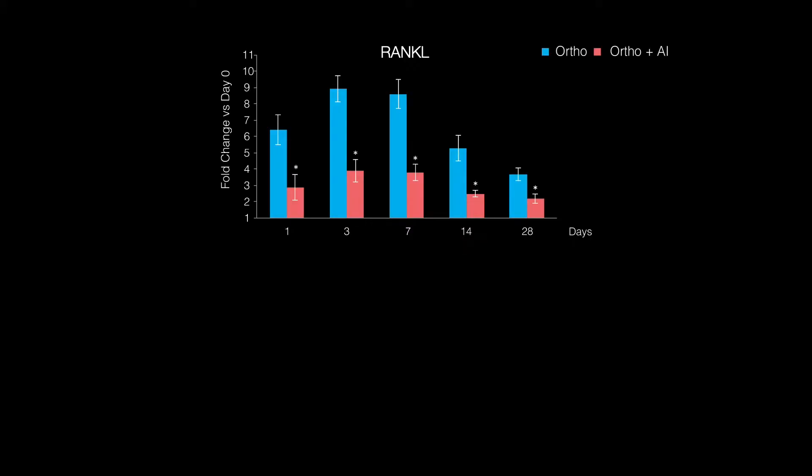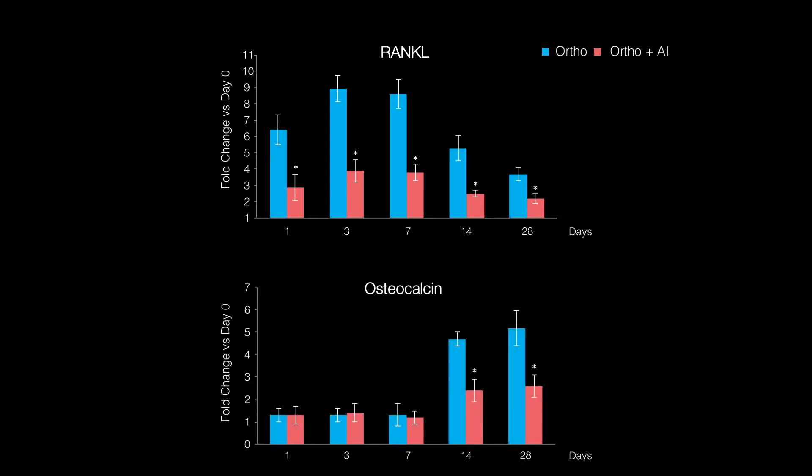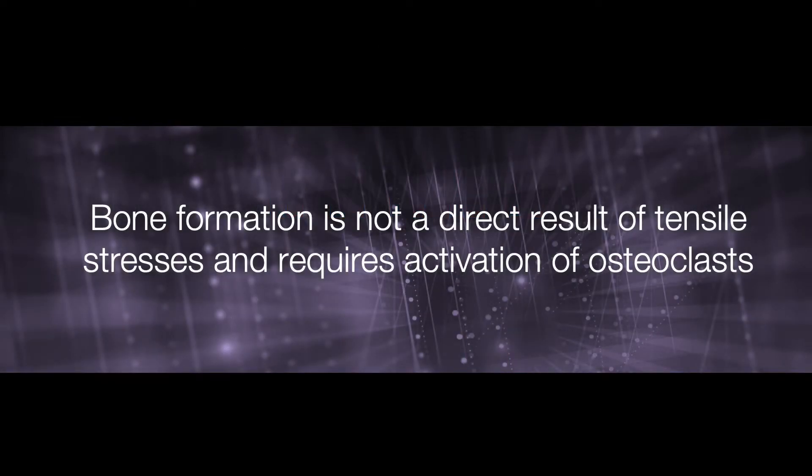The second evidence that supports this observation is the application of anti-inflammatory medication. As discussed previously, anti-inflammatory medication decreases osteoclast activity — in other words, it prevents bone resorption. Usually, anti-inflammatory medication in the dosages we use does not affect the osteoblasts. However, when animals are exposed to anti-inflammatory medication, osteoclast activity decreased significantly, and surprisingly, osteoblast activity also decreased significantly, which supports the idea that osteoclasts are necessary for osteoblast activity.